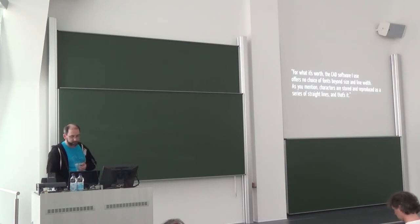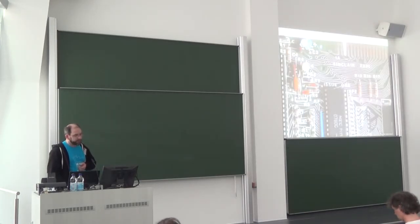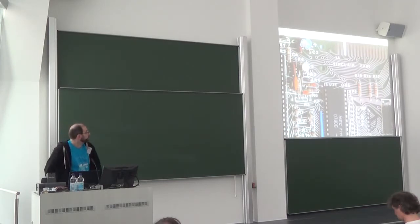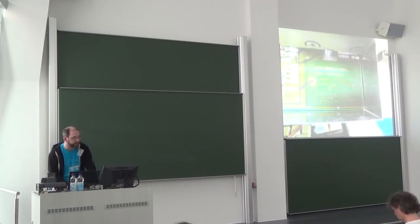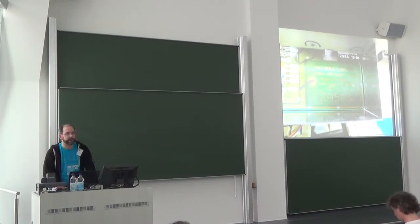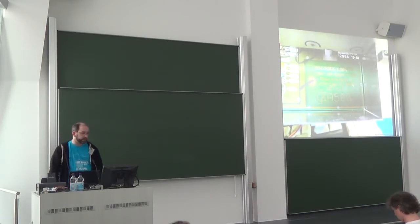Basically, fonts are constructed from straight lines. This was not always the case, especially if you go back in history. This is the ZX81, and it has a beautiful font silkscreen-printed on top of it. This is something that happened when CAD was introduced. Obviously the font looks quite ugly — straight lines cobbled together. But even here there's some attempt at doing logo artwork, in the case of the Commodore logo.